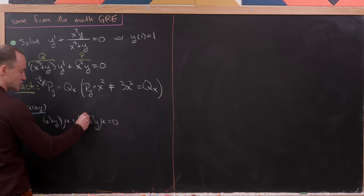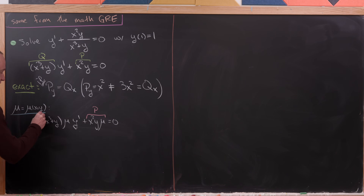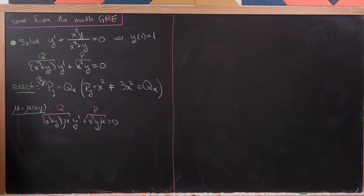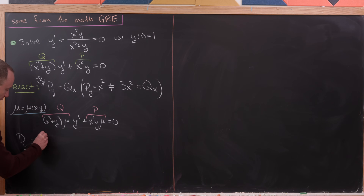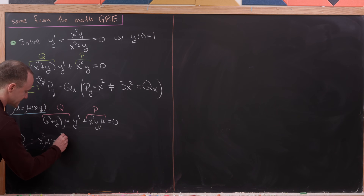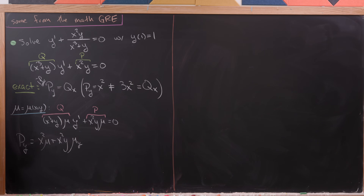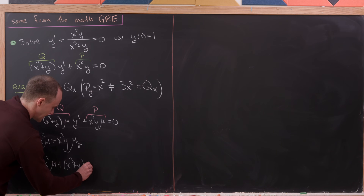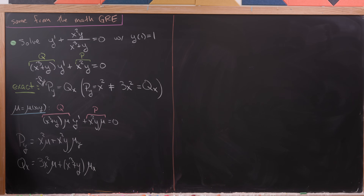Now P is x²y · μ and Q is (x³ + y) · μ. We want to pick μ so that this is exact. Taking ∂P/∂y gives x²μ + x²y · μ_y, and ∂Q/∂x gives 3x²μ + (x³ + y) · μ_x.